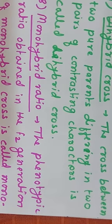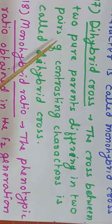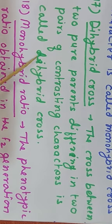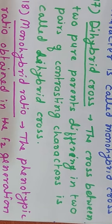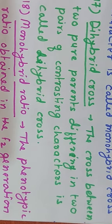Similarly, if inheritance of two characters needs to be investigated, that cross is called a dihybrid cross. A dihybrid cross is a cross between two pure parents differing in two pairs of contrasting characters, or a cross to detect the inheritance of two pairs of contrasting characters.